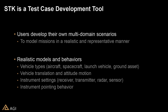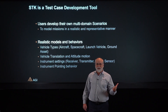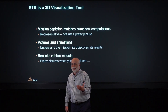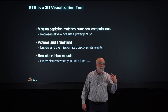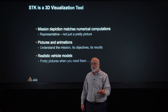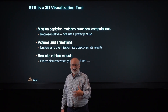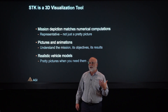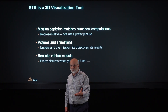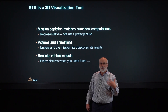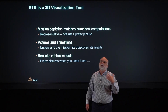STK uses realistic models and behaviors, so vehicles have different types and behave like they're supposed to, with instruments on board that behave correctly, including pointing behavior. STK also has a 3D visualization component — so not only do you get the test data, you can understand the results because you can see what's happening, what the test was supposed to do, and what the answers turned out to be. The mission you see in STK is not just a pretty picture — it's representative of the numbers. The numbers tell us what the animations show. And for those who need to communicate to an audience that doesn't understand as much, we can do the pretty pictures as well.